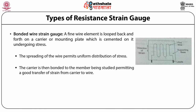In strain gauge bridge measurement, the gauge forms one arm of the bridge. Only one gauge is the active element producing an output proportional to the strain; the other gauge is simply used for balancing. A dummy gauge is used to remove any error due to temperature variation. Since only one gauge responds to the strain, the strain causes bridge unbalance just as in the case of a single gauge.